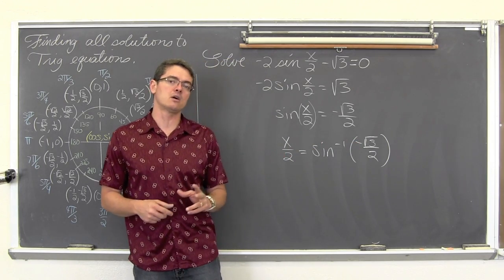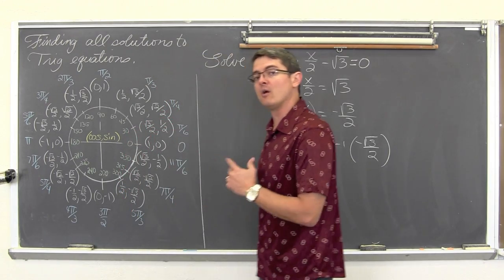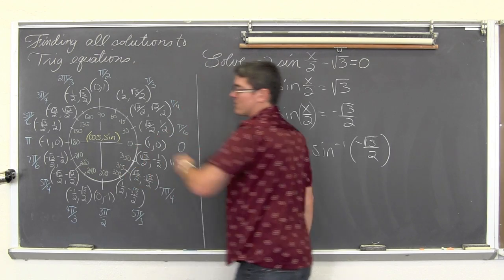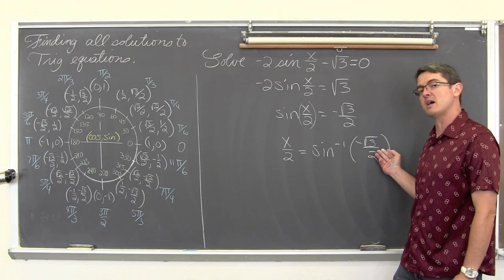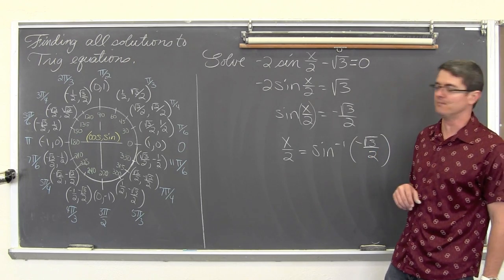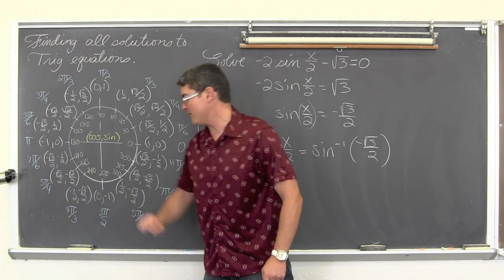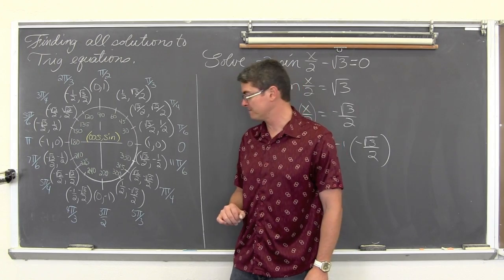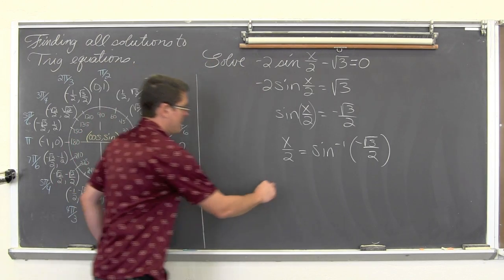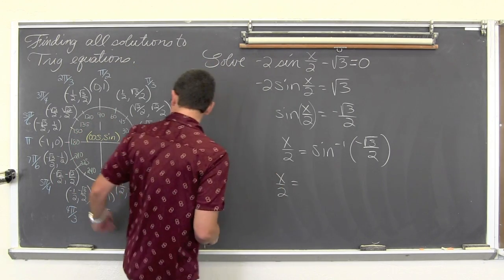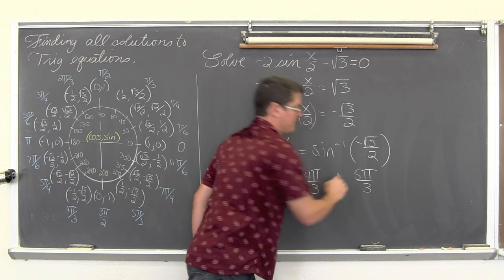So if we had a restriction on our values, this would actually have no solution. But since we don't and we are looking for all possible solutions, we are going to go around this unit circle until we find those angle measures — that is what you get from an inverse trig function — those angle measures that give you a sine value equal to negative square root of 3 over 2. The sine function is y over r, so it is the y values on the unit circle, and we have those at 4pi over 3 and 5pi over 3. So x over 2 is equal to 4pi over 3 and 5pi over 3.